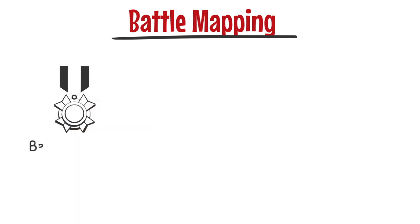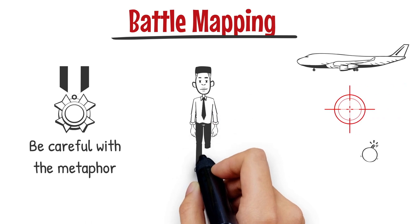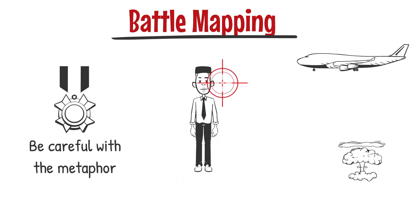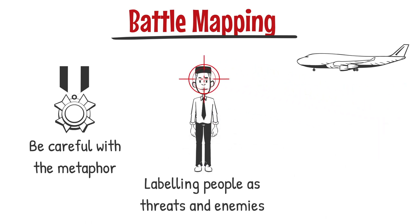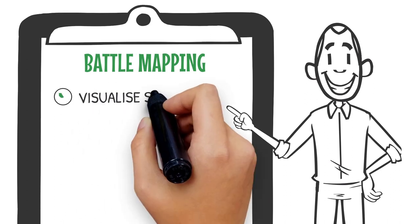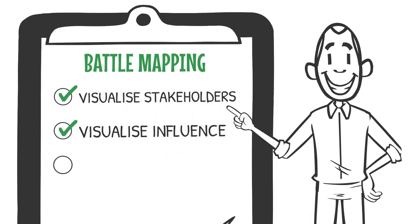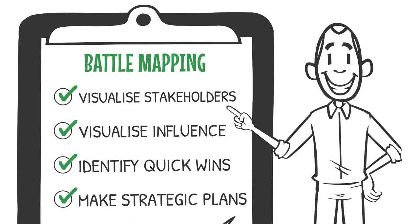Of course, you should be careful with the metaphor, especially if it extends into bringing in air support and assassinations and other aspects of warfare. And you need to be careful labelling colleagues as threats and enemies, because that could easily backfire. But the idea of visualising your stakeholders and the influence maps between them, then identifying quick wins and strategic plays, could be very helpful for you or your team.